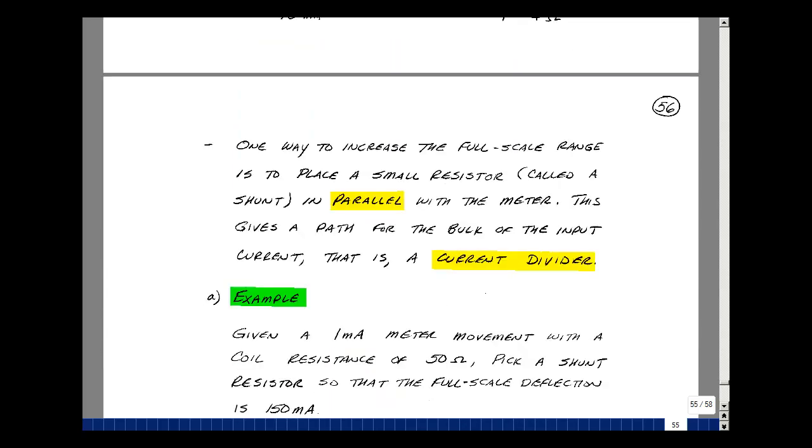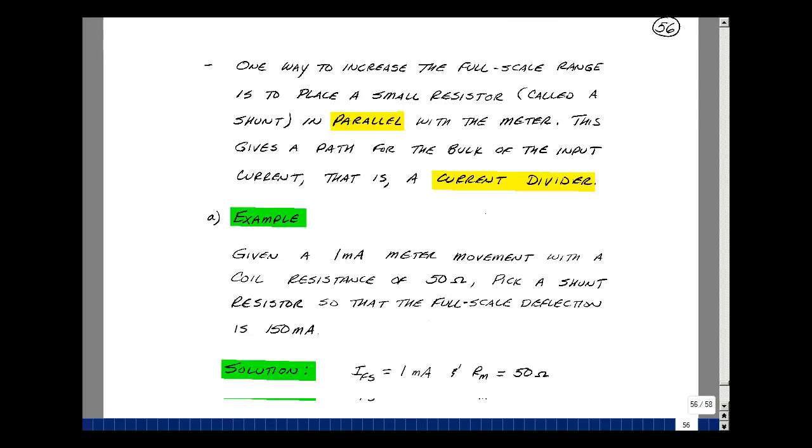Suppose you wanted to use one of these meters to measure more than the full-scale deflection. We could use the idea of a current divider to let some of that current go into a parallel resistance and the remainder going into the meter. This parallel resistor is also called a shunt.